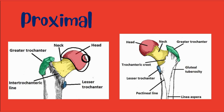The neck is cylindrical in shape and connects the head of the femur with the shaft. The greater trochanter is the most lateral palpable projection of the bone, originating from the anterior aspect. The lesser trochanter is smaller than the greater trochanter and projects from the posteromedial side of the femur.